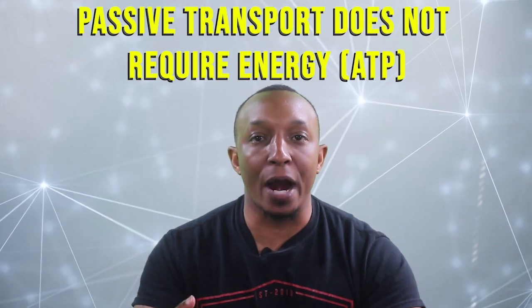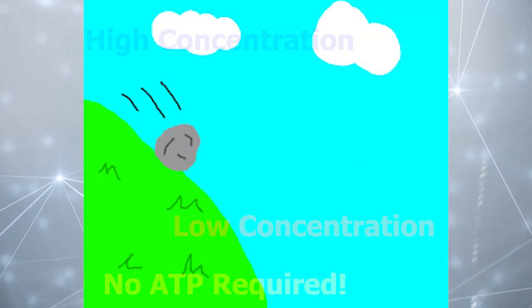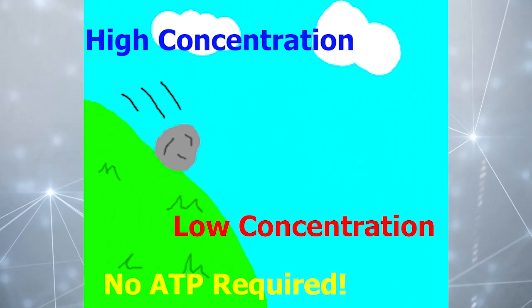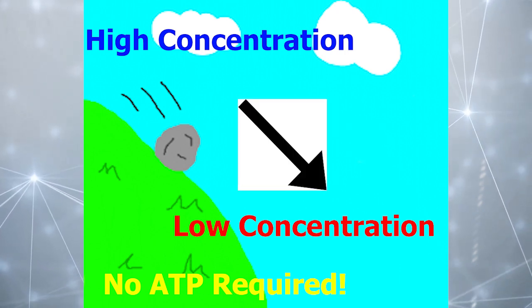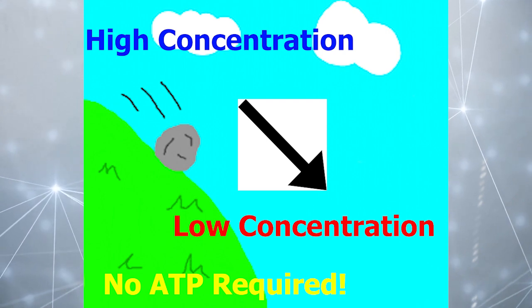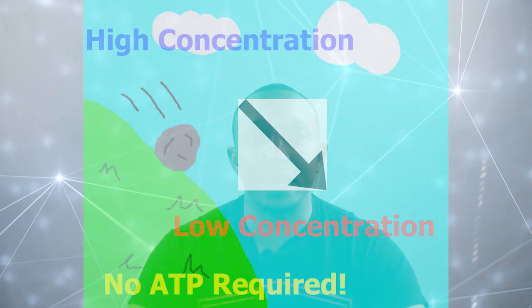Now let's move on to passive transport which does not require energy. In passive transport materials are moved from an area of high concentration to an area of low concentration down its concentration gradient. This is like rolling a ball down a hill which does not require any energy for that ball to roll down the hill.